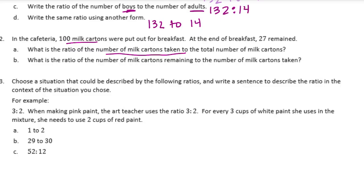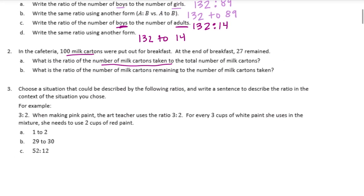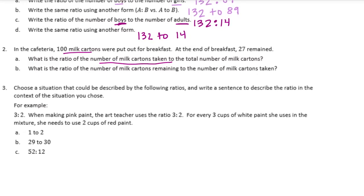So let's see, if we had 100 to start, 27 remained, we can subtract to figure out how many were taken. 100 minus 27, I need to borrow. We end up with 73. So we can write 73 taken to the total number of milk cartons. Remember, order matters. We have 73 to, and then the total number of milk cartons was 100. So 73 to 100. We could have written it also as 73 to 100. Both are correct.